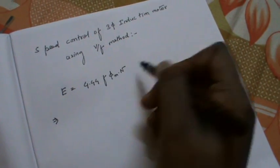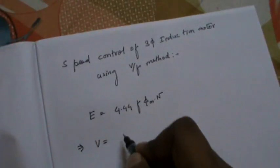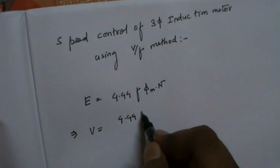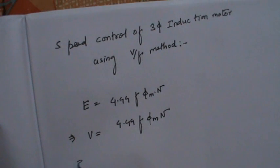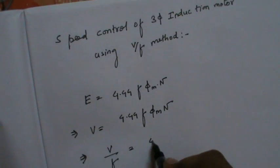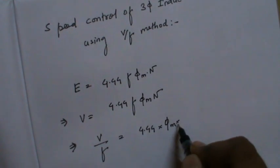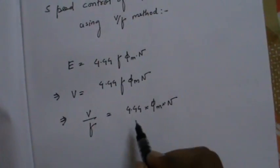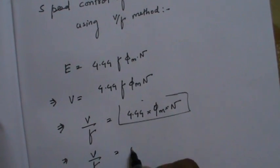So I can write this formula as V equal to 4.44 times φM times N. Here V is the applied voltage, so I can write V by F equal to 4.44 times φM times N. For an induction motor, this whole term is actually a constant, so we can write that V by F is equal to a constant.